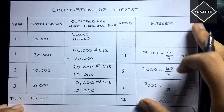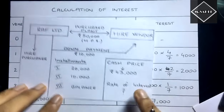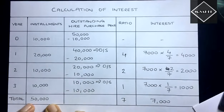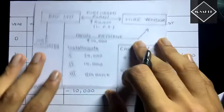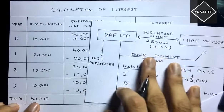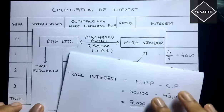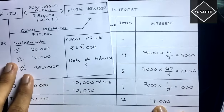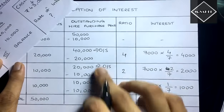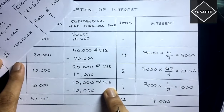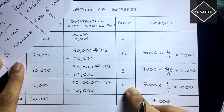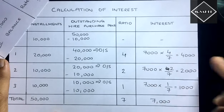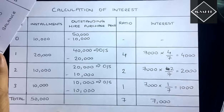This is how you calculate interest without the rate — since the rate was not given in the question. We took the installments to get the higher purchase price, subtracted the cash price to get total interest of 7,000, found outstanding higher purchase prices of 40,000, 20,000, and 10,000 in ratio 4:2:1, then used those ratios to allocate interest across each installment.